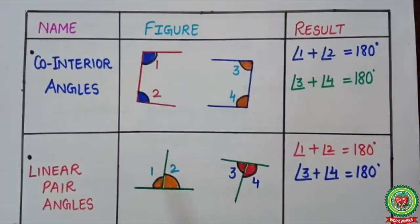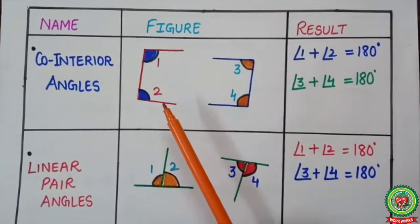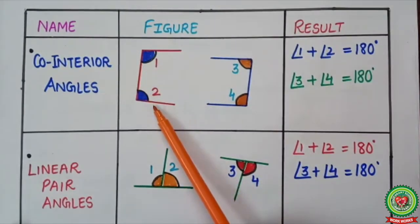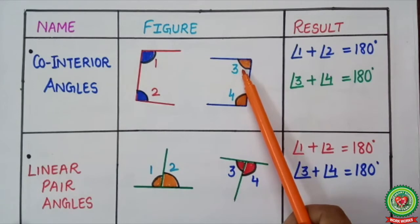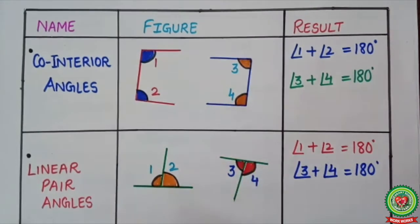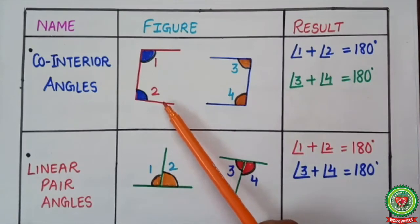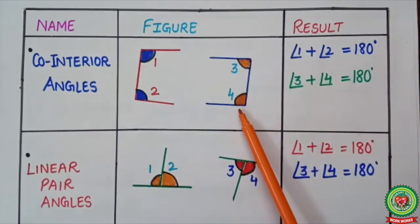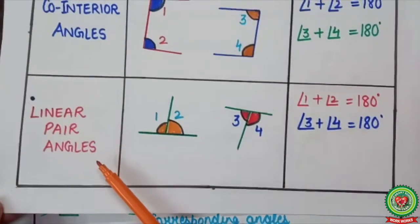The next type is co-interior angles, which form when a big bracket shape is there. Here angle one and angle two form one big bracket. Similarly, angle three and angle four form another big bracket on the opposite side. The relation between them: the sum of two co-interior angles is 180 degrees. So angle one plus angle two equals 180 degrees, and angle three plus angle four equals 180 degrees.